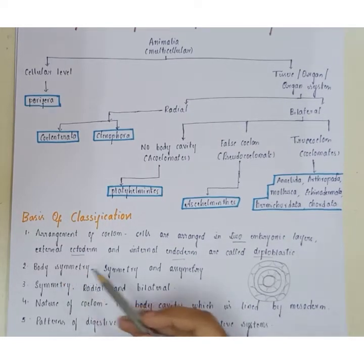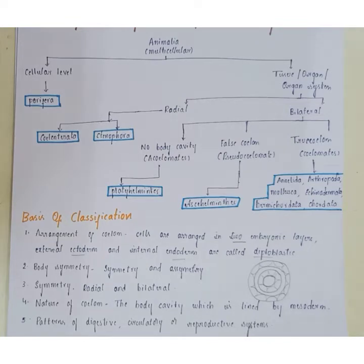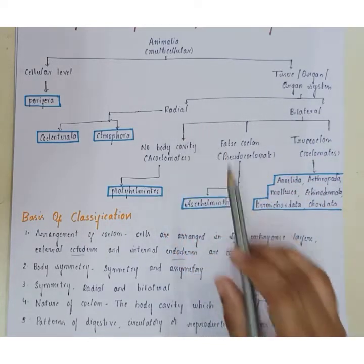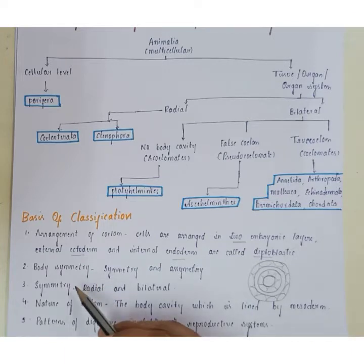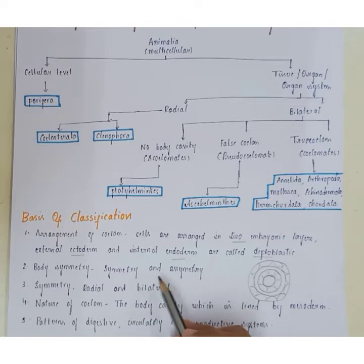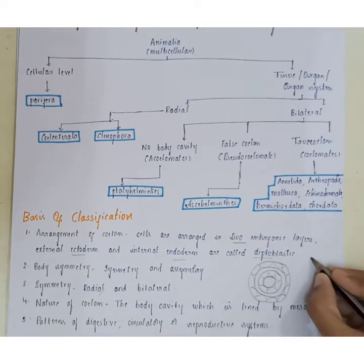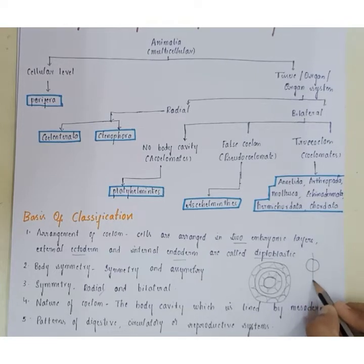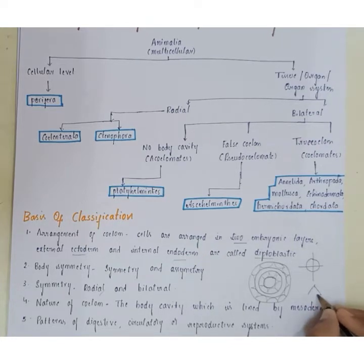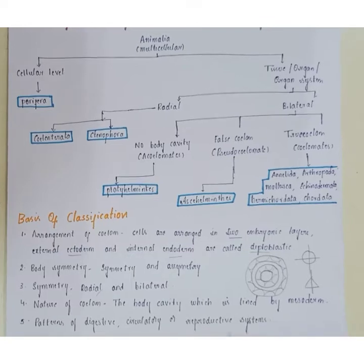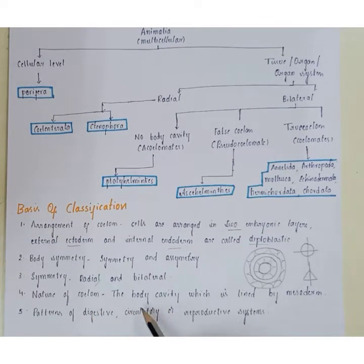Body symmetry is the second basis of classification. If an organism can be divided into two equal halves in any plane, it is radial symmetry. If it can only be divided in one plane, it is bilateral symmetry. Animals are classified into symmetrical and asymmetrical types, where symmetry includes radial and bilateral. For example, a circle shows radial symmetry as it can be divided in any plane; a triangle shows bilateral symmetry as it can only be divided in one plane.